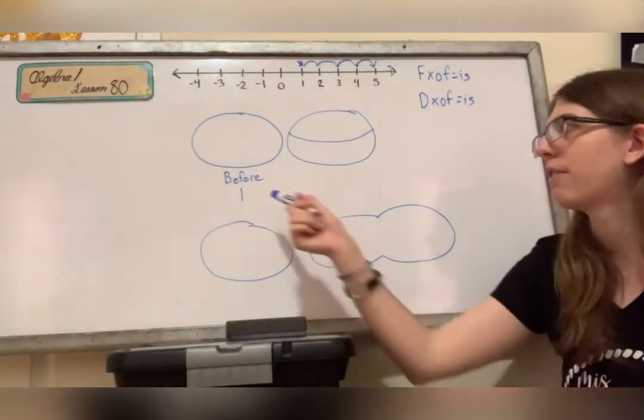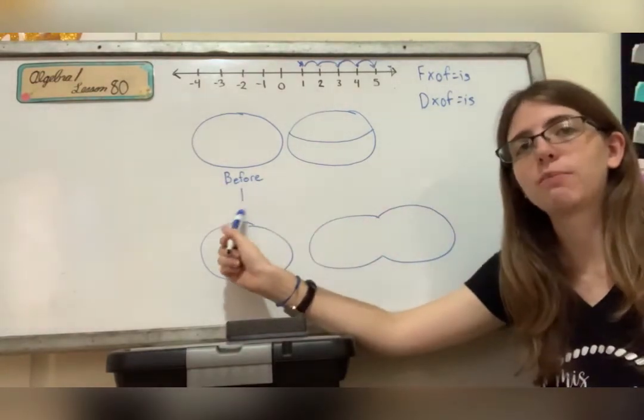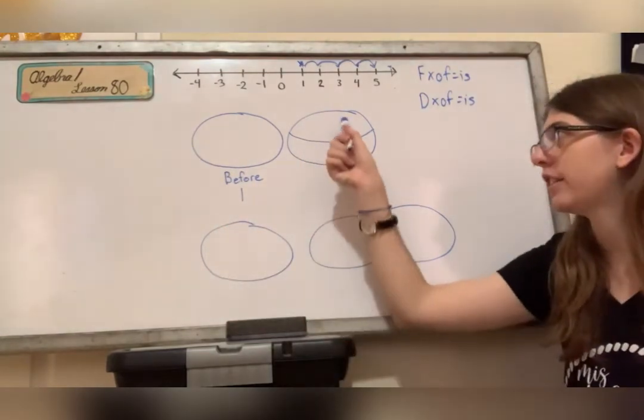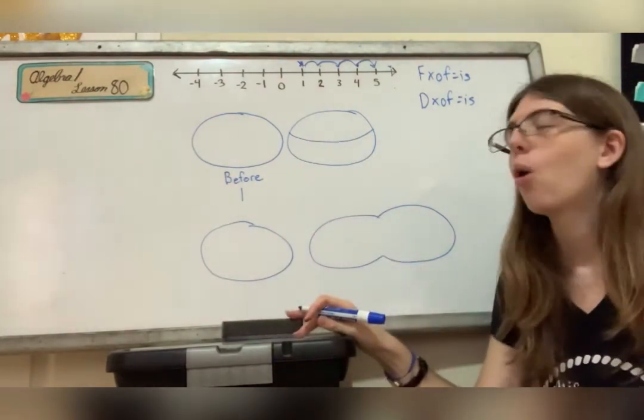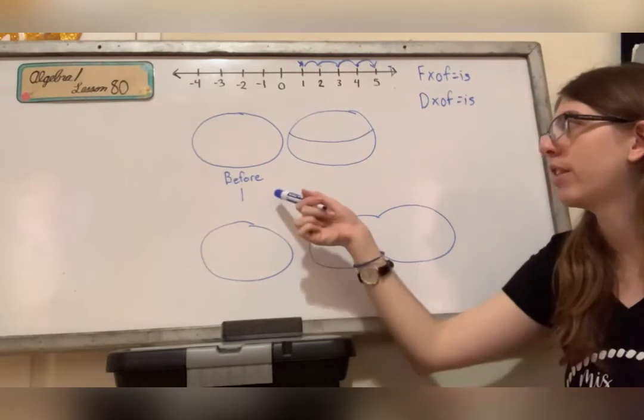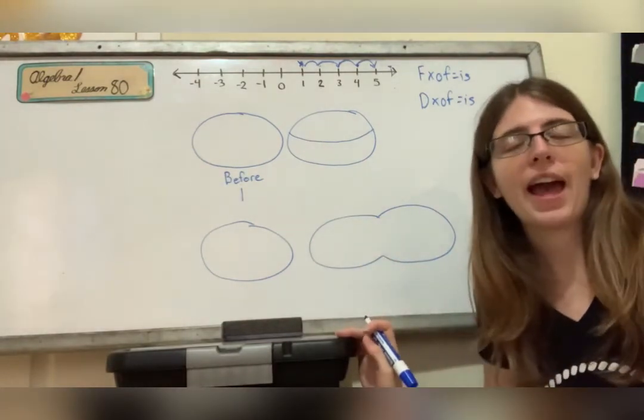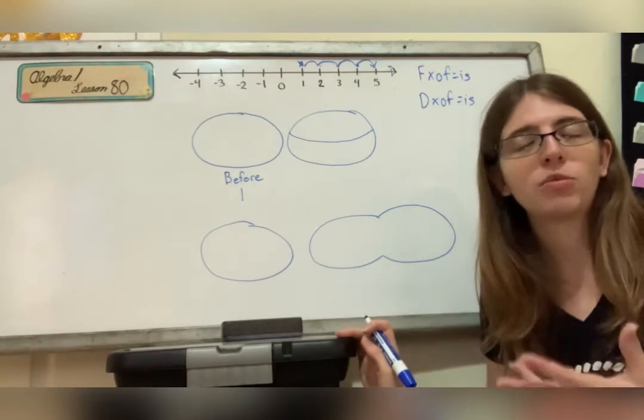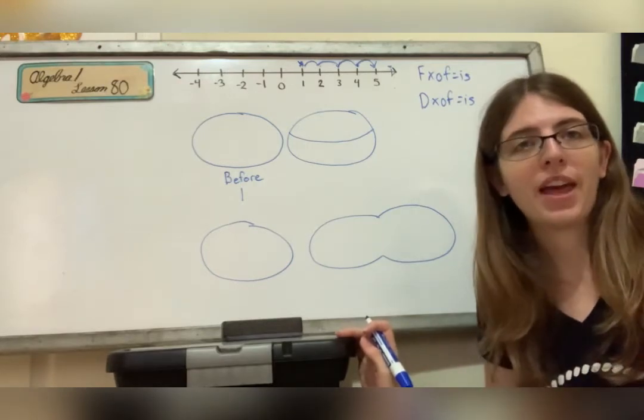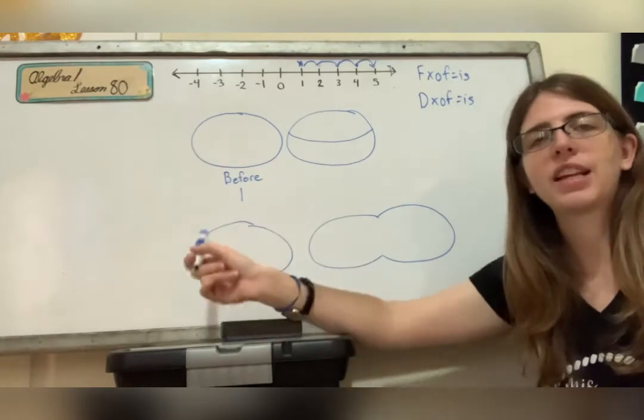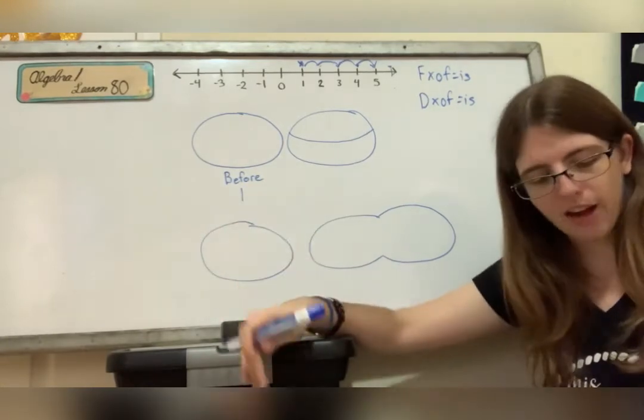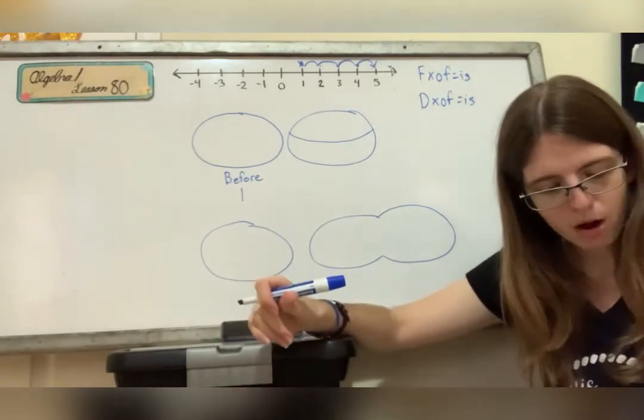Because either you'll have a fraction that is smaller than one, which means that you divide it into two parts, or you'll have a mixed number greater than one, meaning you go to the double bubble, or you'll have a decimal greater than one and you'll use the double, or you'll have a decimal smaller than one and you'll use the divided.